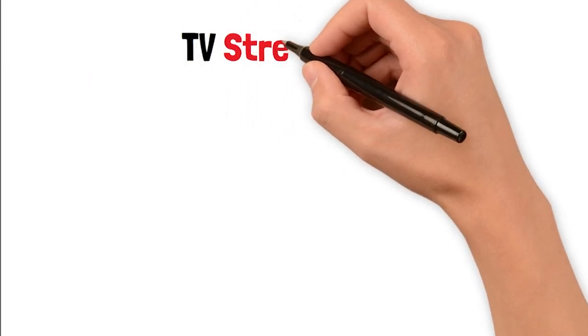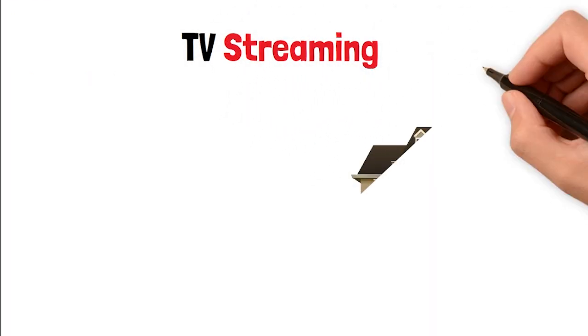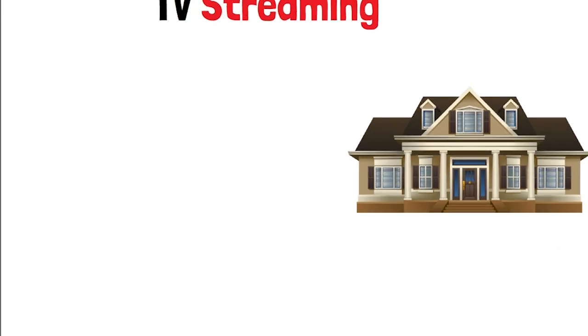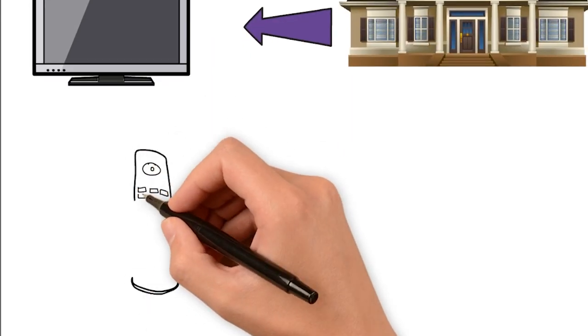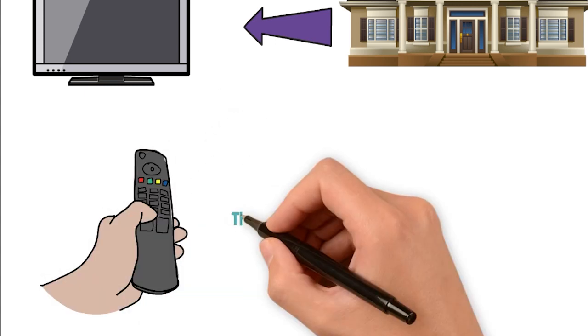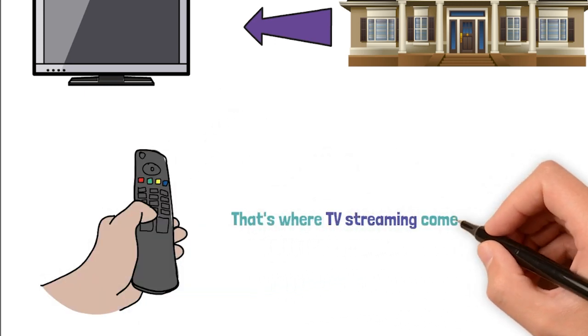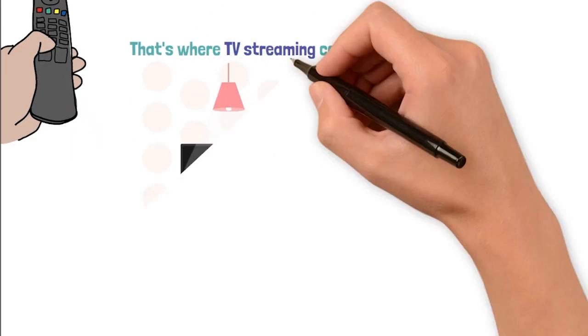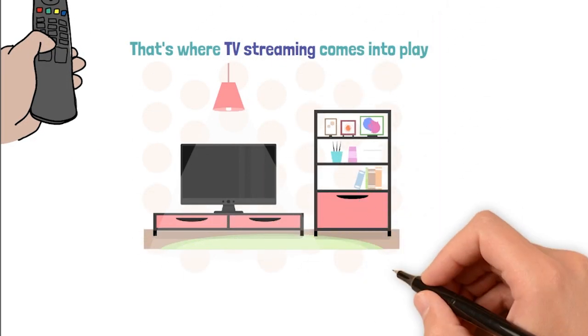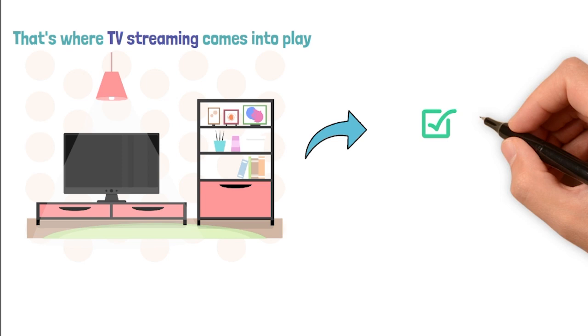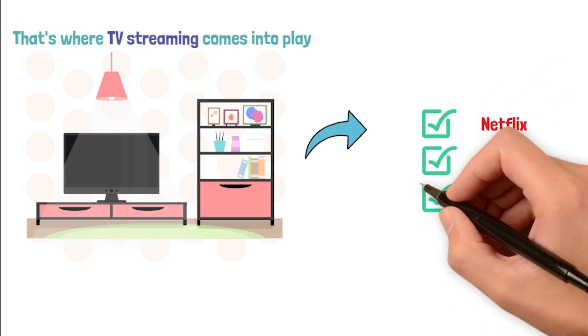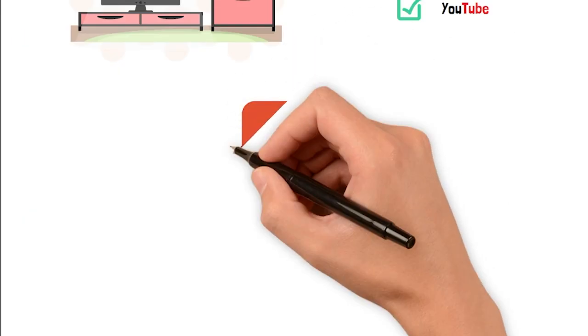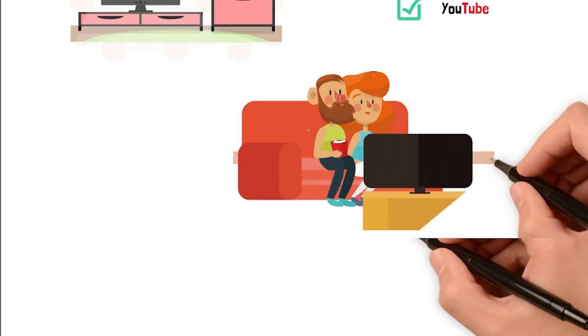When it comes to creating the ultimate Airbnb experience, having a seamless and enjoyable TV streaming setup is key. Let's face it, after a long day of exploring the city, your guests will want to unwind and catch up on their favorite shows or movies. That's where TV streaming comes into play. One genius hack you can share with your viewers is setting up a smart TV in the living room. With a smart TV, guests can easily access popular streaming platforms like Netflix, Hulu, YouTube with just a few clicks. It's a no-brainer way to keep your guests entertained during their stay.